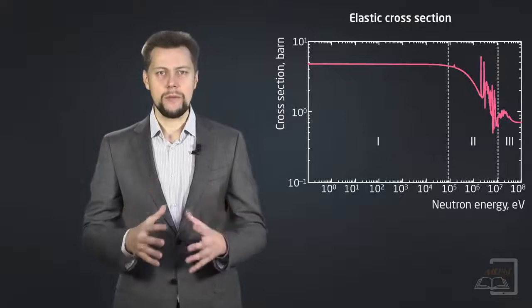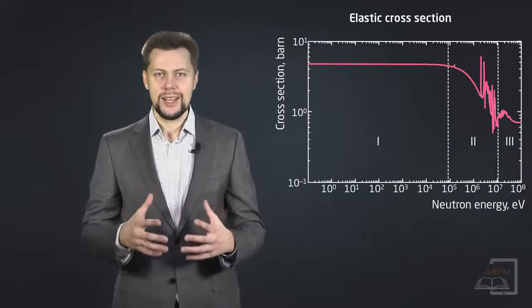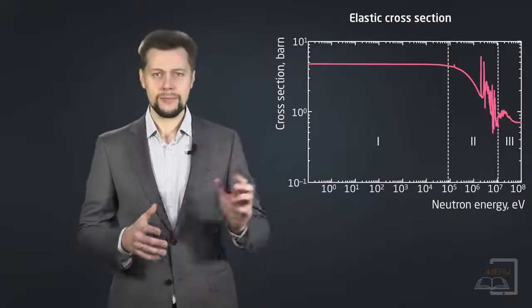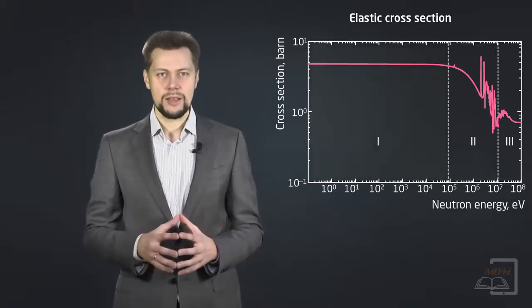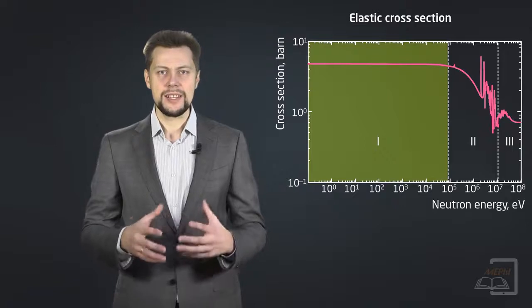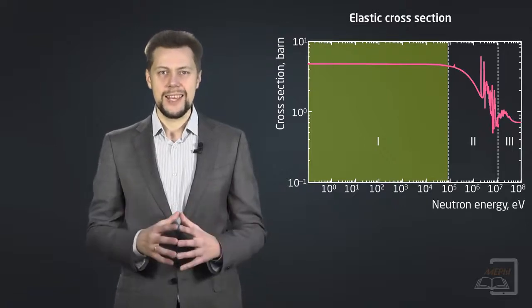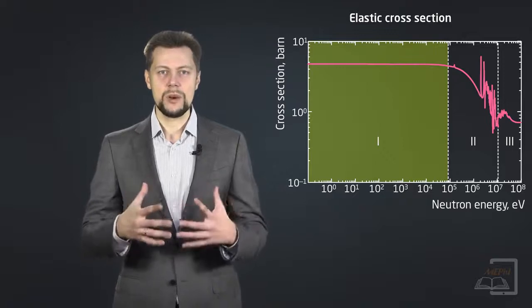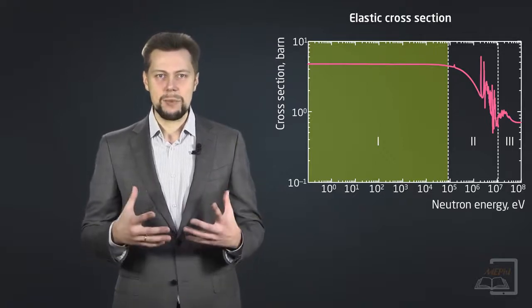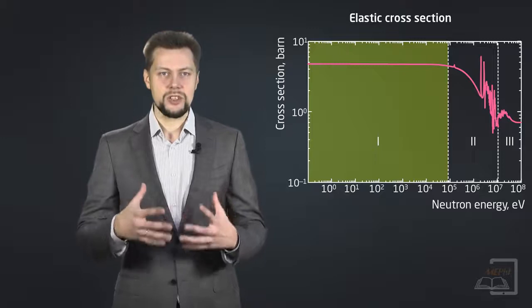The typical behavior of elastic scattering cross-section is presented there. There are three distinct regions. The first, elastic scattering is almost constant. In this region, scattering does not occur with formation of compound nucleus. This type of scattering is called potential elastic scattering.